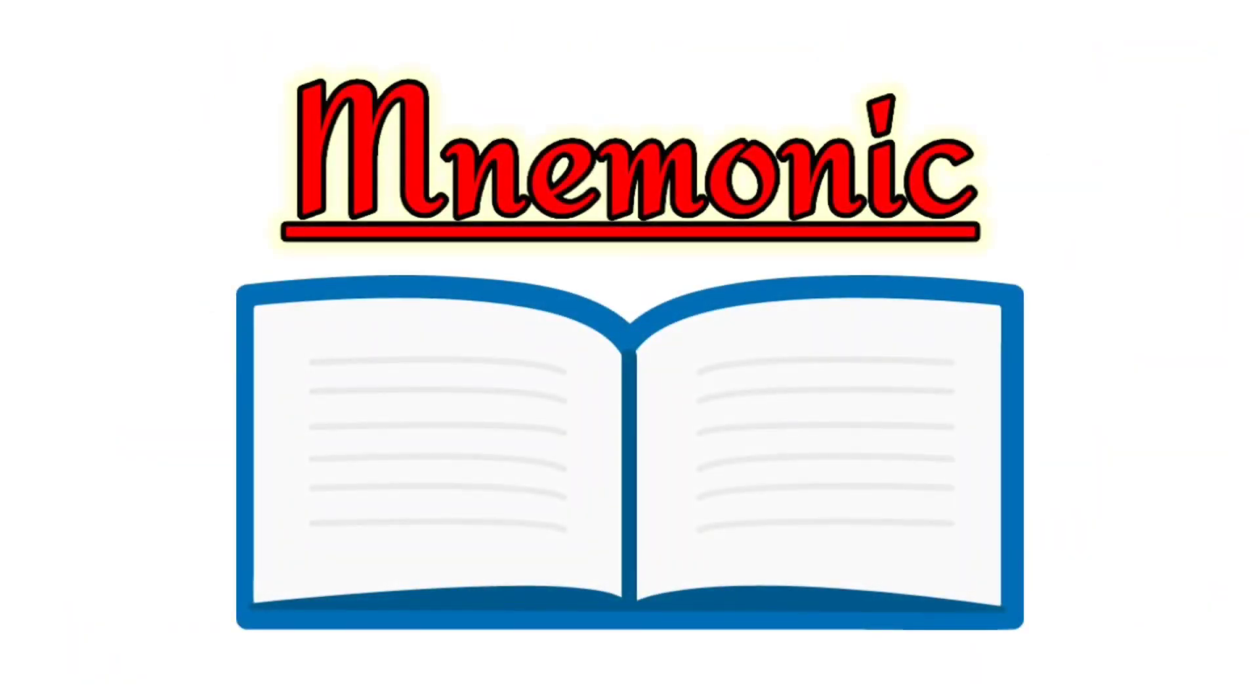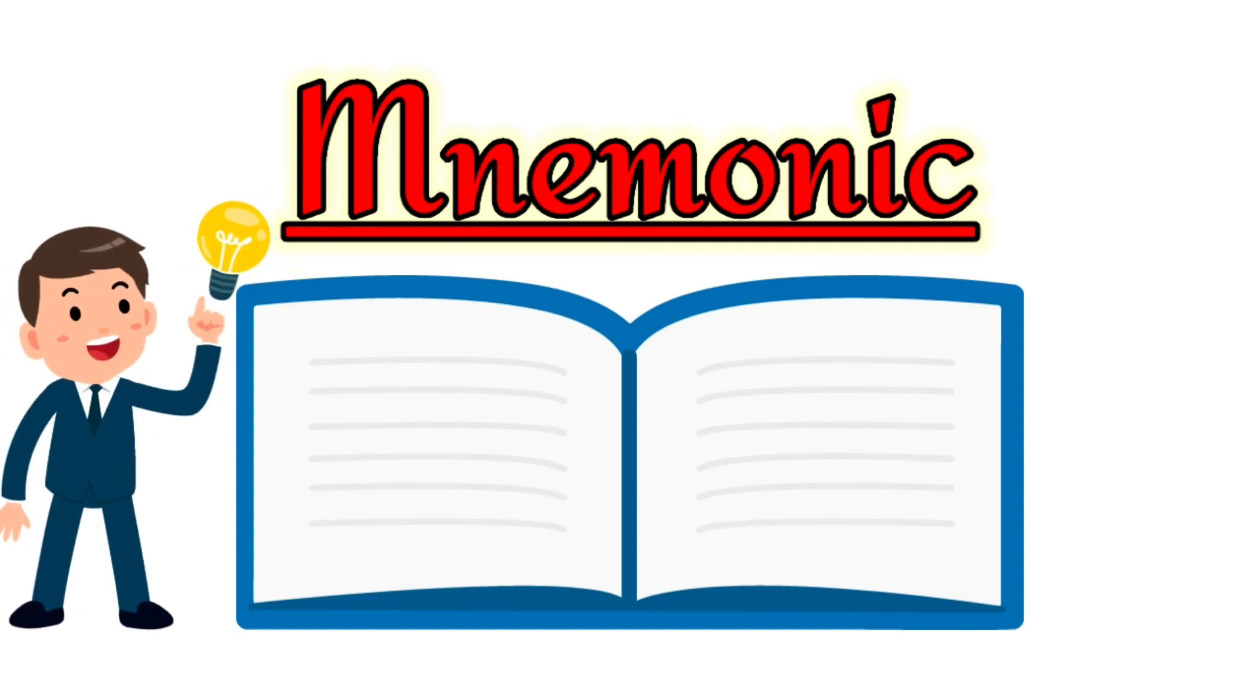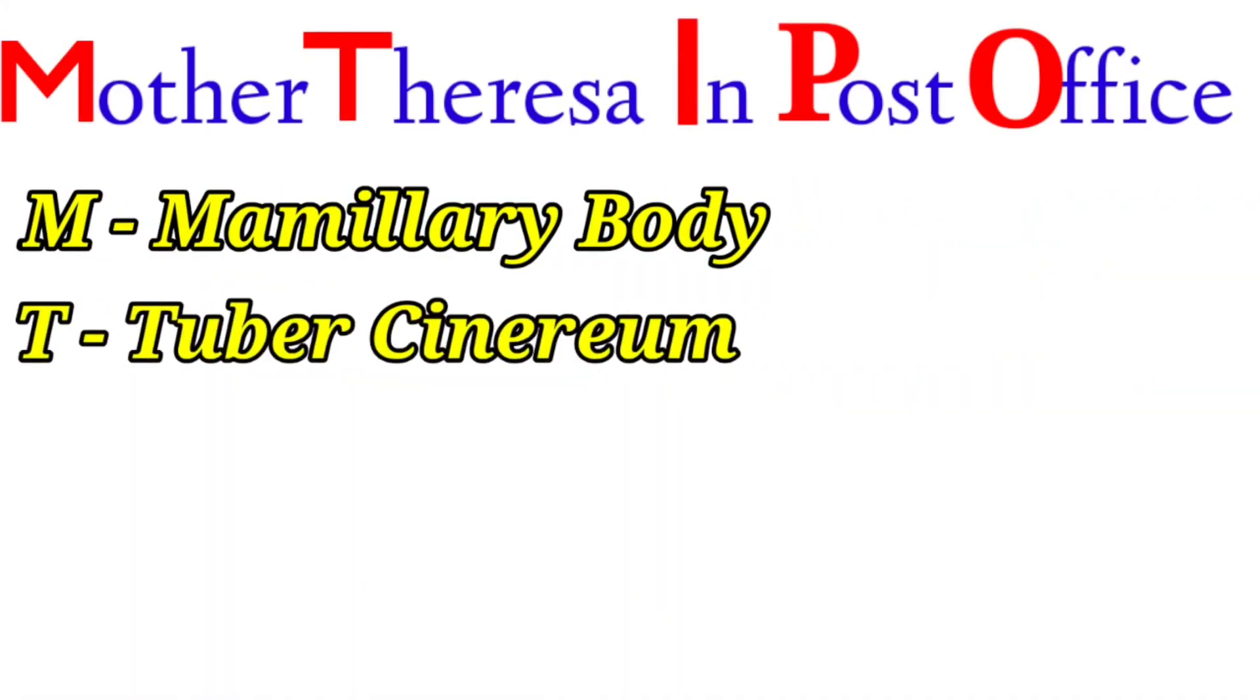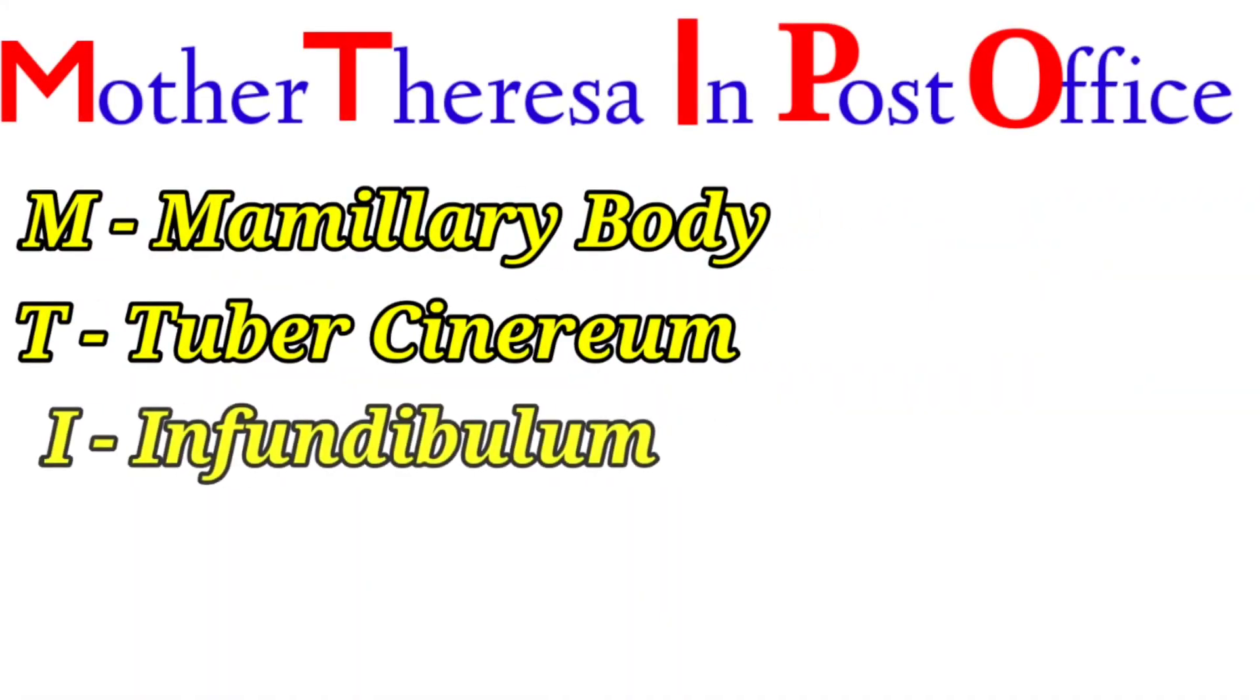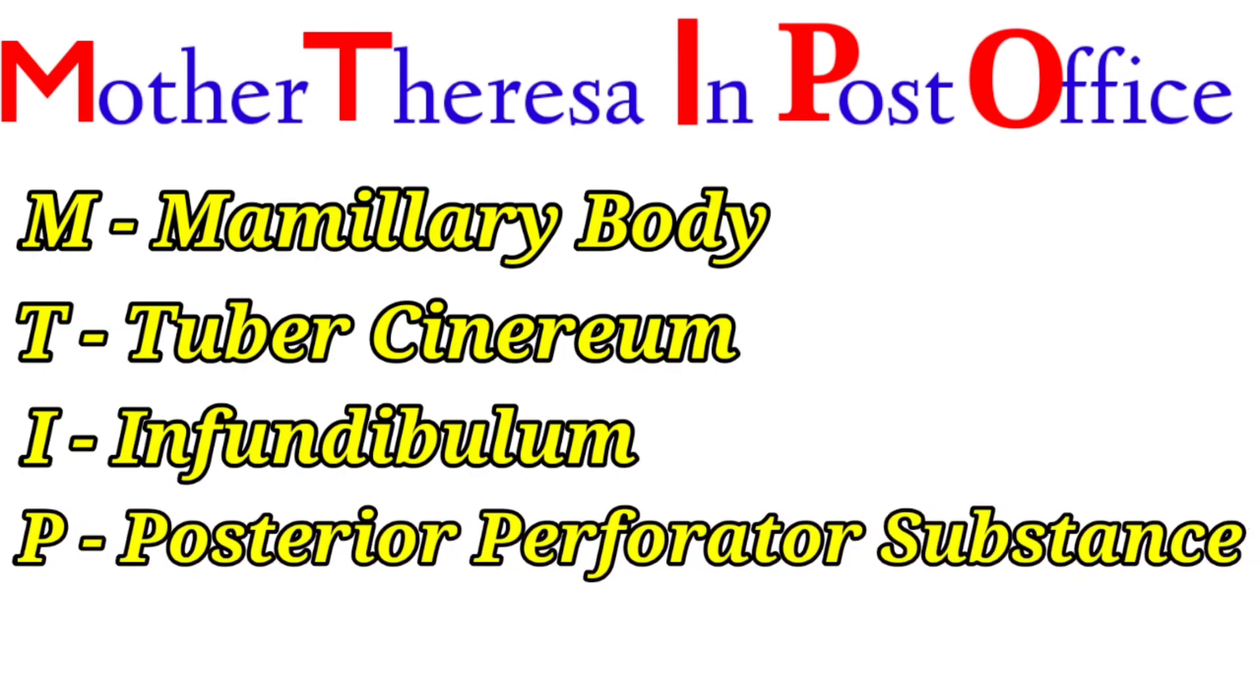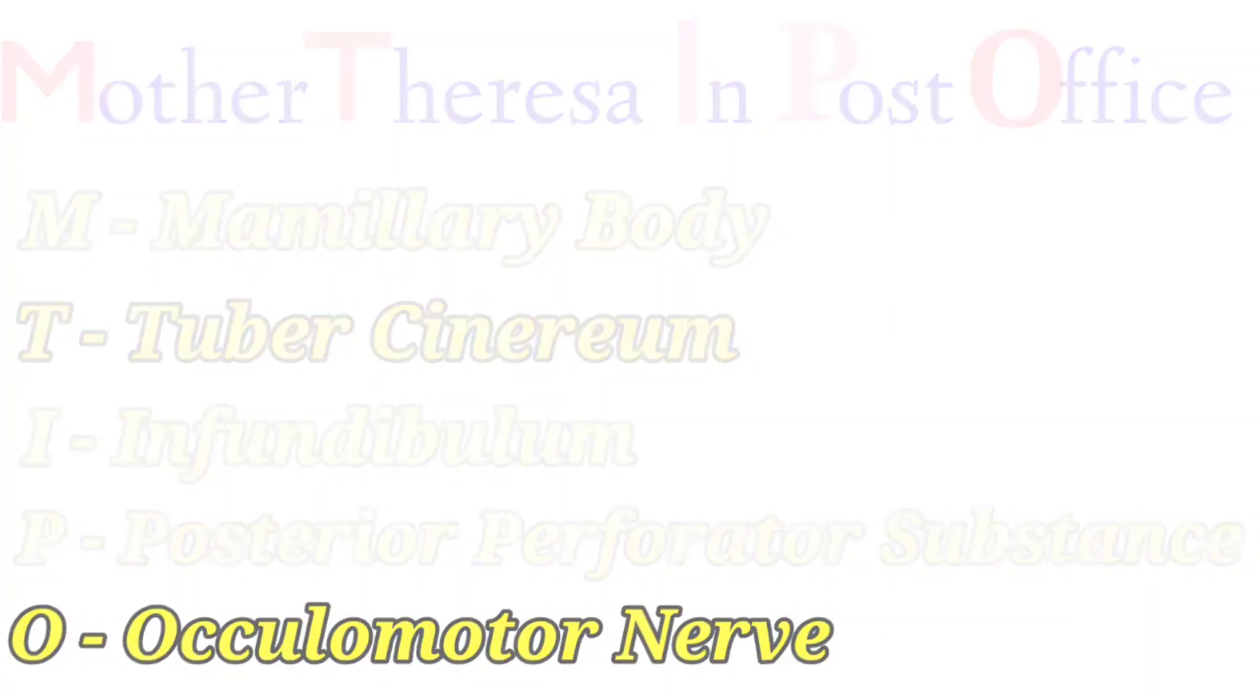All of these are first letters, so we have to use a mnemonic: Mother Teresa In Post Office. M for mammillary body, T for tuber cinereum, I for infundibulum, P for posterior perforated substance, and O for oculomotor nerve.